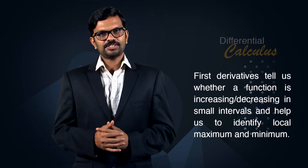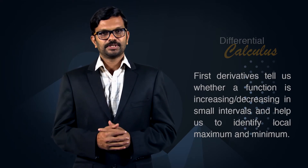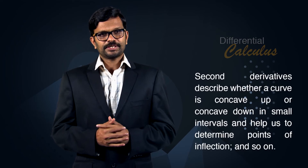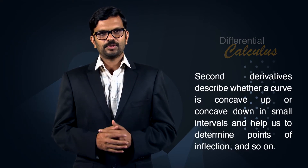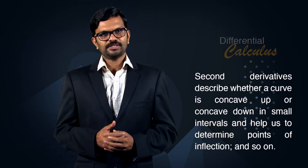Hi friends, welcome back. There are several tools that help us while tracing curves. As discussed in the previous sessions, first derivatives tell us whether a function is increasing or decreasing in small intervals and help us to identify local maximum and minimum. Second derivatives describe whether a curve is concave up or concave down in small intervals and help us to determine points of inflection. In this session, we introduce another tool — asymptote — that helps us in sketching curves, especially when the curve is far away from the origin.